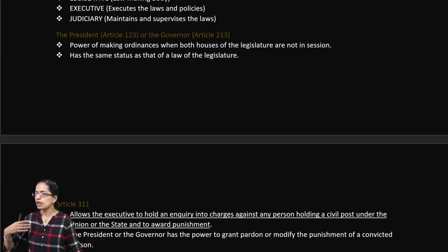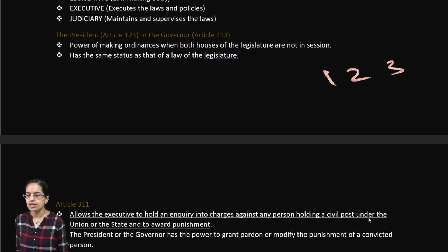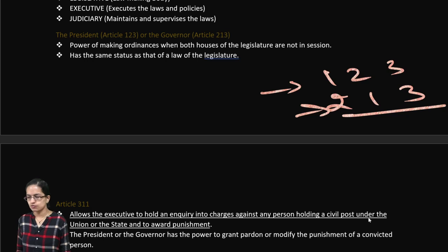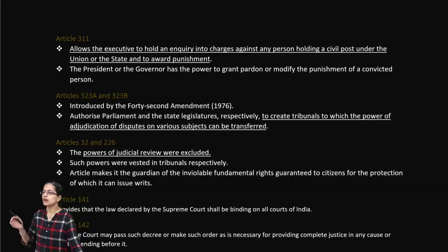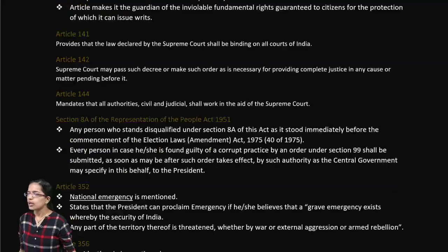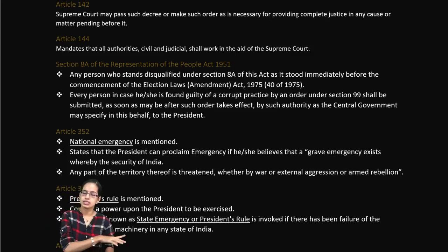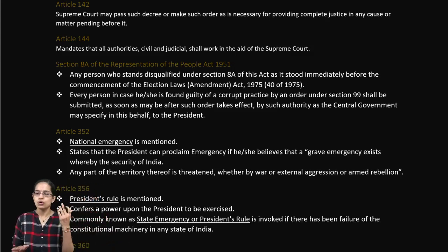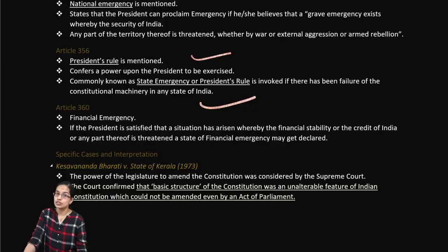Regarding checks and balances, the President and Governor have the power to make ordinances under Articles 123 and 213 respectively. The 42nd Amendment created tribunals. Judicial review systems, laws declared by the Supreme Court, and emergency provisions are also important. Articles 352, 356, and 360 cover national emergency, state emergency, and financial emergency respectively. India has never yet witnessed a financial emergency.